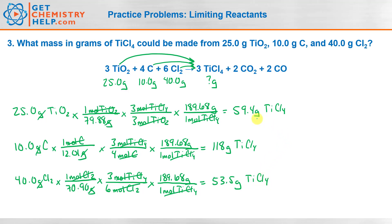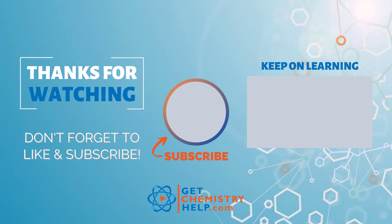So how much could we make? If we mix together these three reactants in these amounts, we always pick the smallest one — so it'd be 53.5 grams. That means our limiting reactant is chlorine. In this case there are actually two different excess reactants: both the titanium(IV) oxide and carbon are excess reactants, because only one of the three can actually limit us. Well, I hope you enjoyed this video on limiting reactants. If you did, be sure to hit that like button and subscribe to my channel so you never miss another video. You can also visit me at GetChemistryHelp.com where you'll find even more helpful videos and practice worksheets. Have a great day!